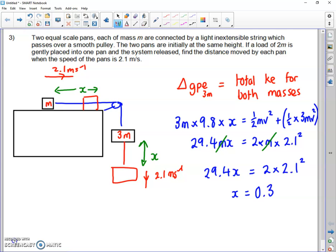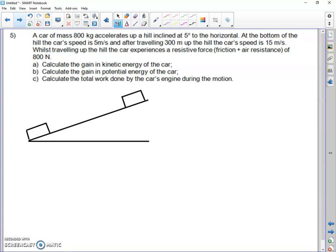Next is question 5. We've got an 800 kilogram car traveling up a hill. We're told there is a constant resistance of 800 newtons, and it increased its velocity from 5 meters per second at the bottom of the slope to 15 meters per second at the top. So even though it's going uphill, it still managed to accelerate. We also know the angle is 5 degrees and it traveled 300 meters along the slope.